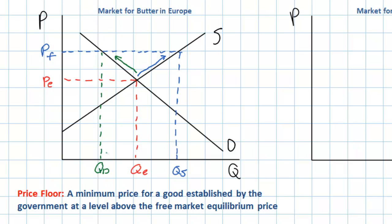The price of butter has increased, but at what cost? An increase in the price of butter caused an increase in the quantity supplied, but the quantity demanded decreased. Therefore, there is now what we call a surplus of butter. A surplus occurs when the quantity supplied of a good is greater than the quantity demanded for the good. There is now a price above the equilibrium of PE, and therefore we have a disequilibrium in the market for butter. Let's examine the effects that this price floor in the butter market has on consumers and producers of butter.